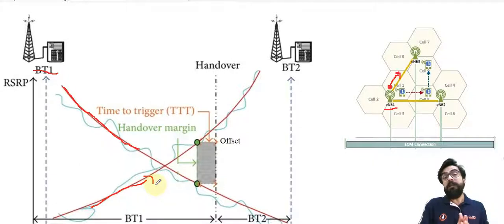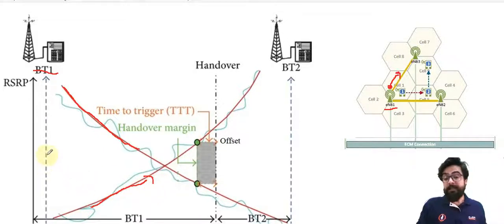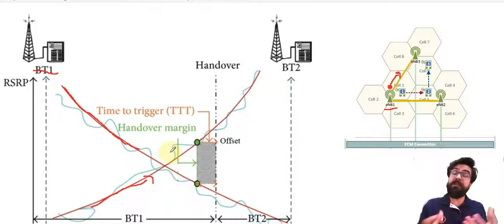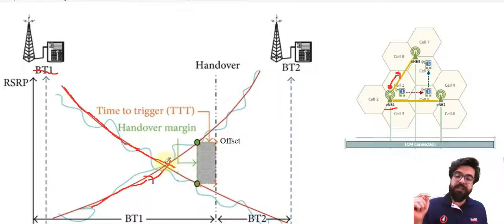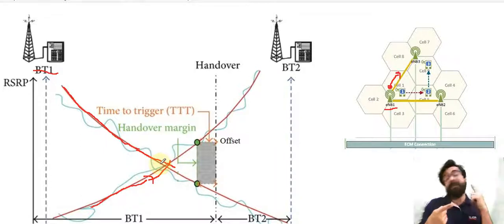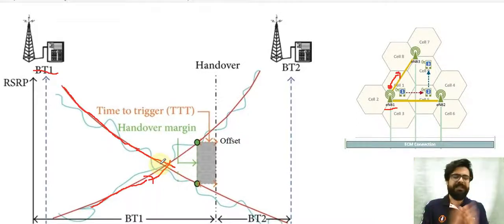If you want to take a look at the received signal level, theoretically there are these smooth lines. But the point is that these blue lines are depicting the real situation because they're going to have some fluctuations. So one of them decreases, one of them increases, and they're going to cross each other at a specific place. And this specific place may be exactly the border of two different cells.